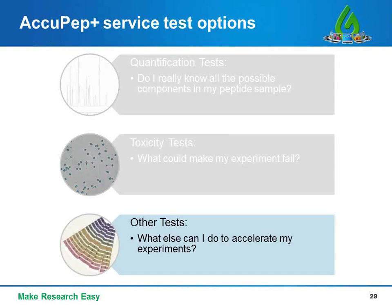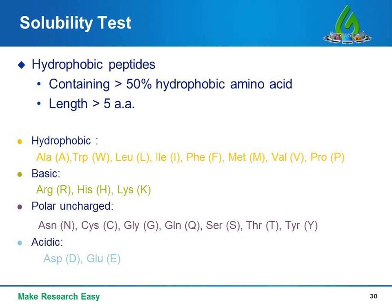Moving on to other tests: what else can I do to accelerate your experiment? The first useful test we provide is a solubility test. Hydrophobic peptides are always the most difficult peptides to handle. Amino acids with different polarities are listed in the slide, with hydrophobic amino acids highlighted in yellow. Theoretically, peptide sequences containing more than 50% hydrophobic amino acids and longer than 5 amino acids can be regarded as hydrophobic peptides, and they always have problems in dissolution.